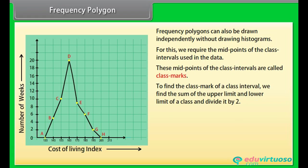To find the class mark of a class interval, we find the sum of the upper limit and lower limit of the class and divide it by two. Thus, class mark = (upper limit + lower limit) / 2.